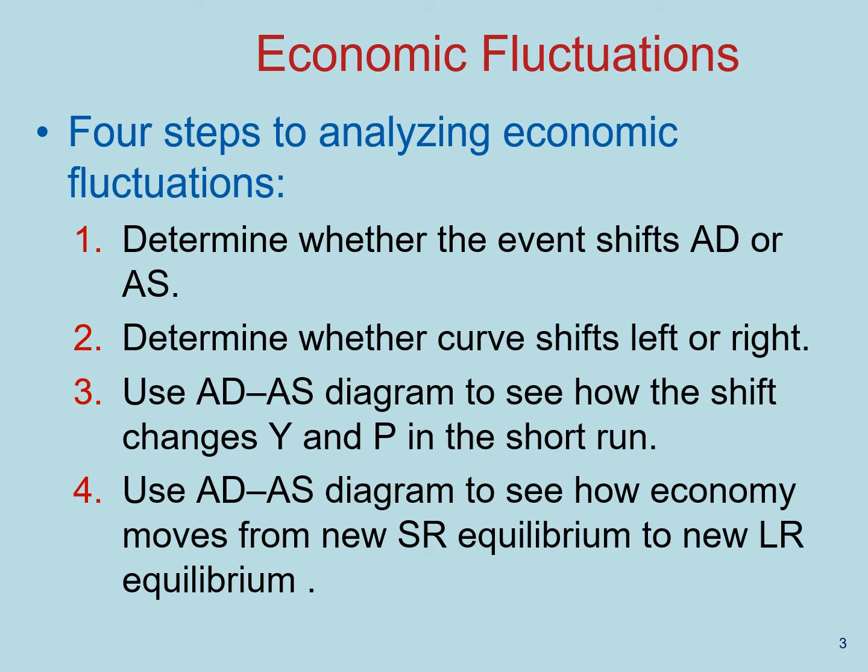Let me give you a recipe to follow. These are four steps to analyzing economic fluctuations. Number one, determine whether the event will shift aggregate demand or aggregate supply. Number two, determine whether the curve is going to shift to the left or to the right. Number three, use the aggregate demand-aggregate supply diagram to see how the shift will change output and prices in the short-run. And lastly, use the diagram to see how the economy will move from the new short-run equilibrium back to the new long-run equilibrium.